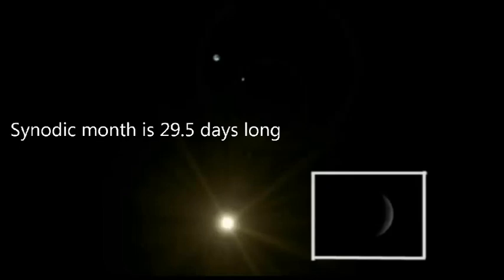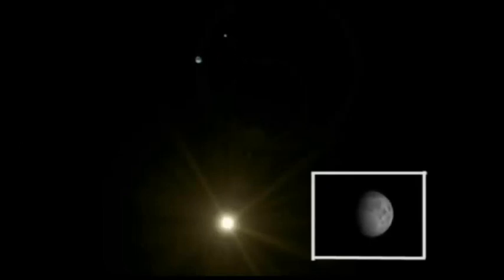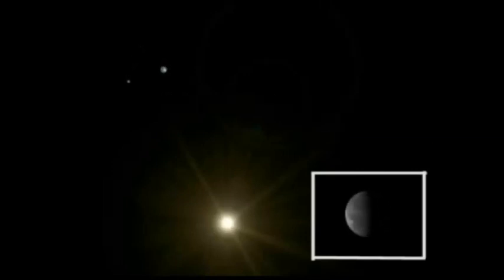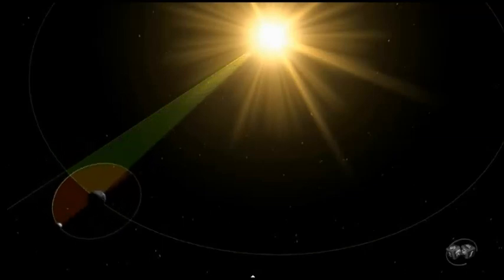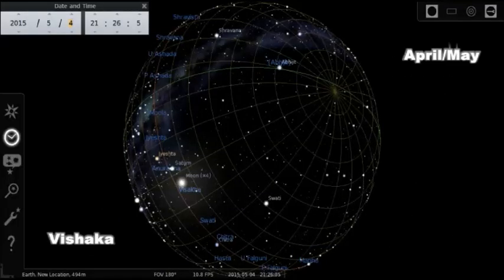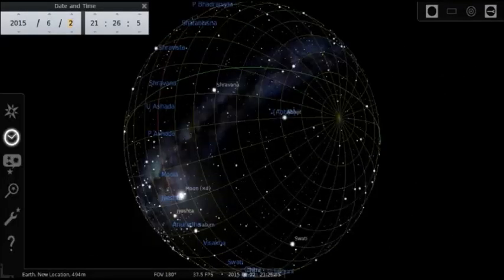Vedic astronomers also approximated the synodic month to 30 units instead of 29.52, a number with decimal places. Each unit within the 30-unit cycle is named as a tithi. A tithi is conceptually similar to a lunar phase and is shorter than a 24-hour day period. The two-day difference between the lunar orbital period and the synodic month creates a sequence of nakshatras on which full moons occur.